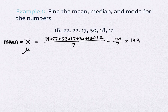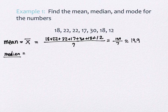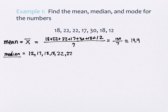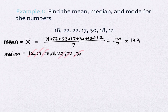For the median, we put the values in order: 12, 17, 18, 18, 22, 22, 30. There are seven values - an odd number. Pairing off from the outside inward, we end up with the middle value, which is 18. So our median is 18.